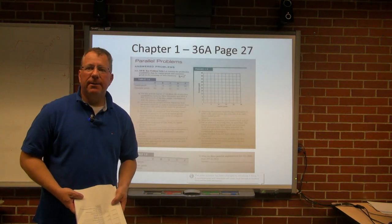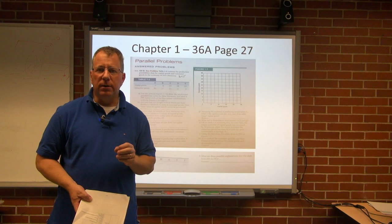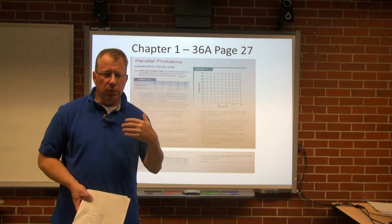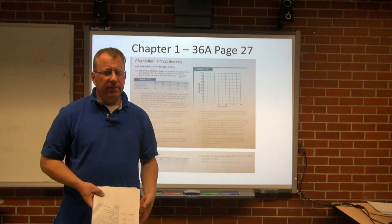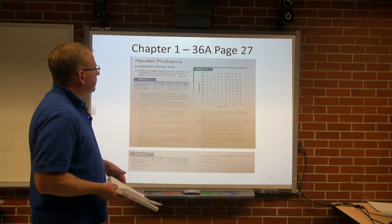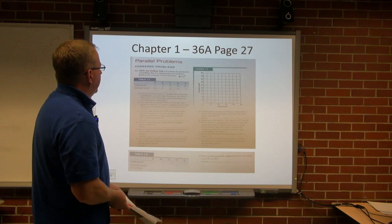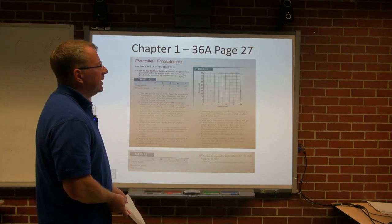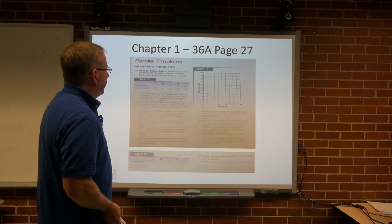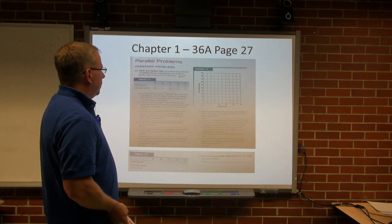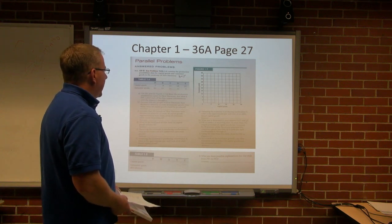Chapter 1 introduced us to the concept of the production possibilities curve, which is nothing more than an explanation of how our economy works. The concepts relate to scarcity - if we produce more of one thing, we have to produce less of another. This first example deals with this. I'm reviewing 36A, found on page 27. Table 1-4 contains production possibilities data for capital goods and consumer goods in the economy of New Harmony. Use the grid in Figure 1-7 to draw the production possibilities curve for New Harmony and label it PP1. Label each of the five output combinations with the letters A through E.